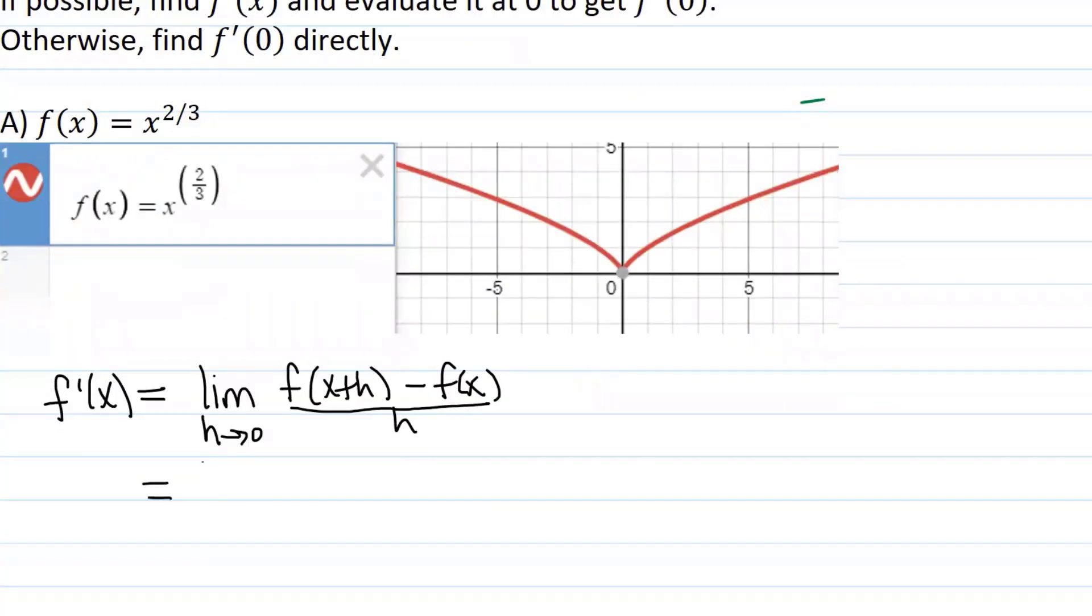So this would be equal to the limit as h goes to zero of x plus h to the two-thirds power minus x to the two-thirds power divided by h.